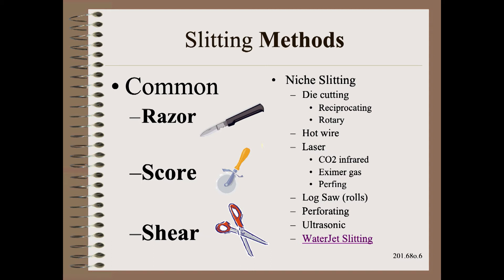Once we choose where the slitter must go, we next must choose a slitting method. There are many methods, sometimes making this choice a bit confusing. However, some webs are easy and may be cut well with several methods. On the other hand, other webs are so difficult that even the best method is continual trouble, and other methods are unworkable.